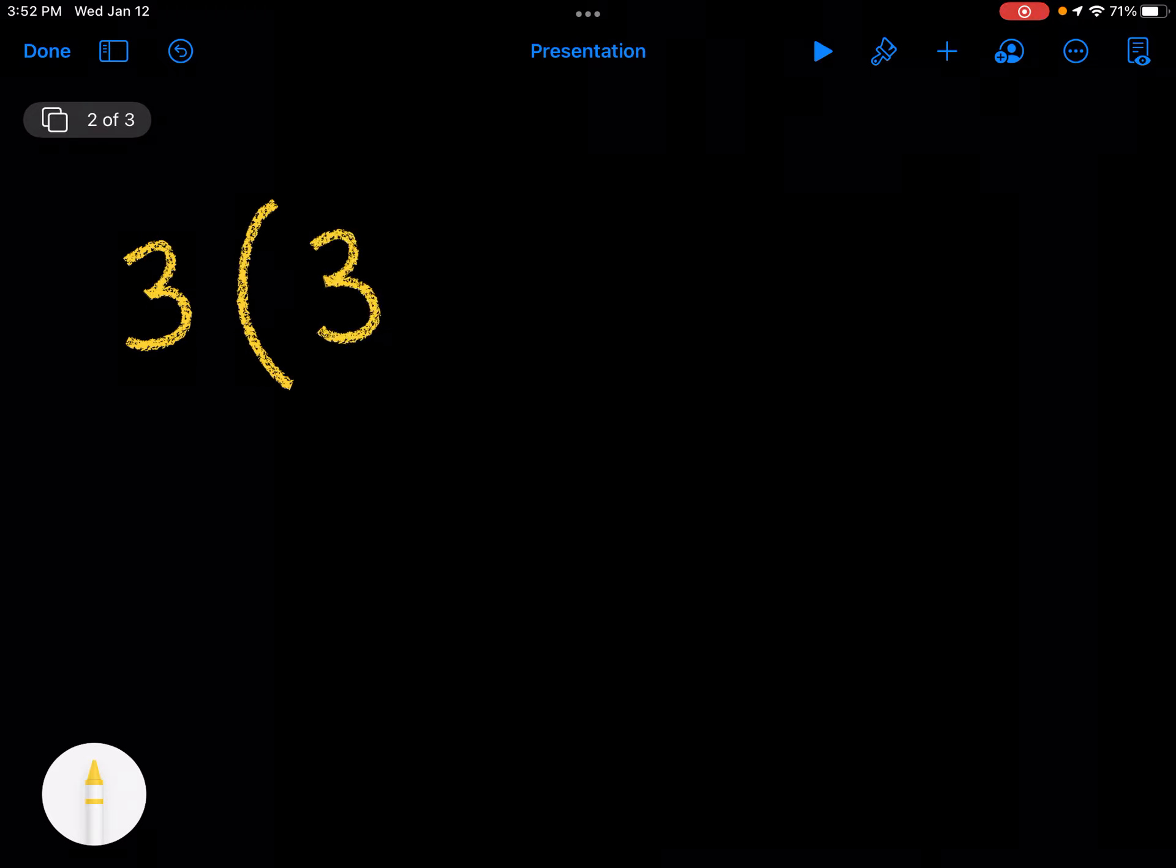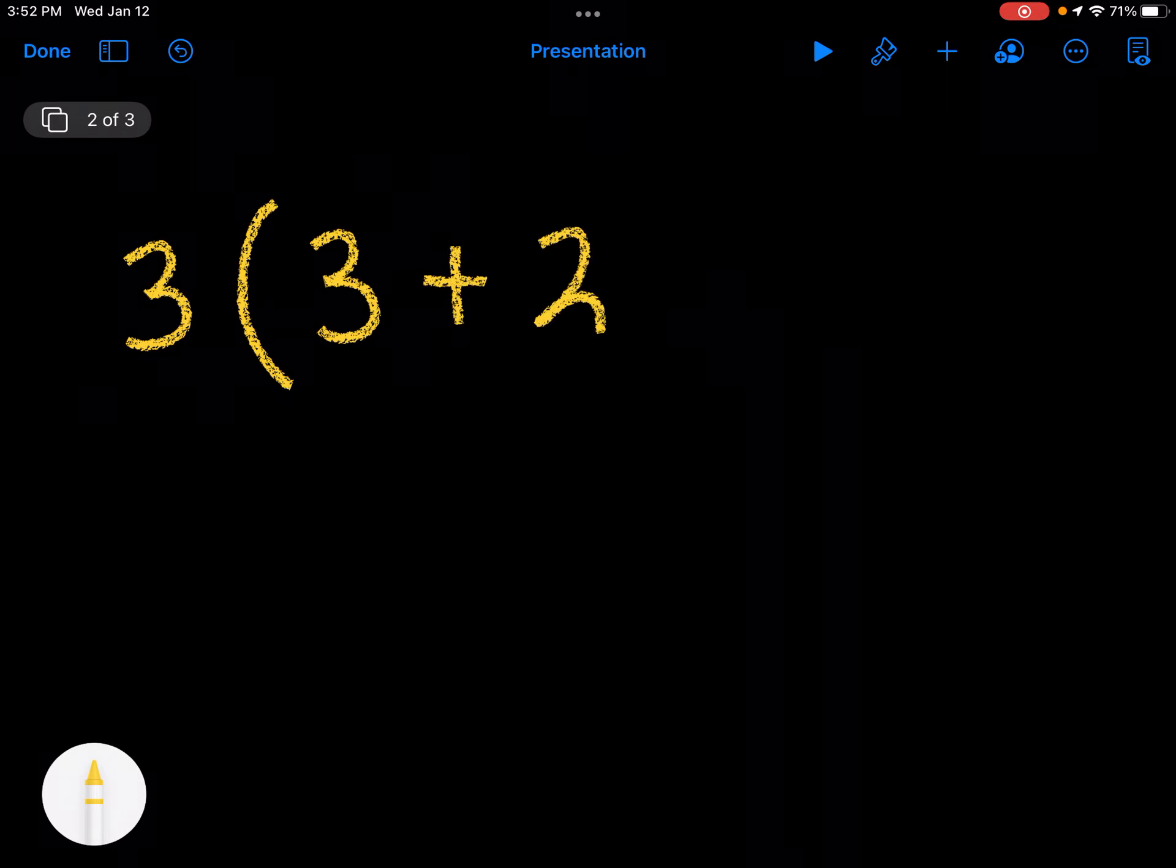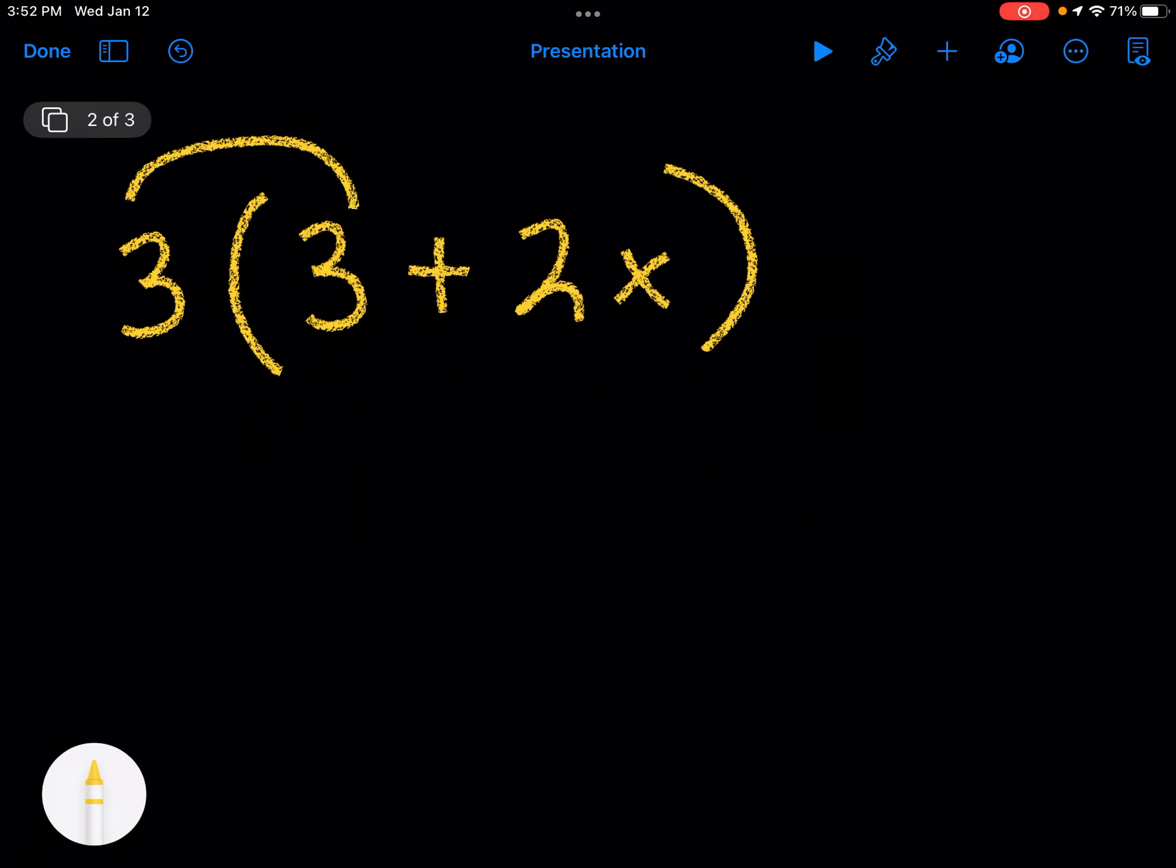So we're going to talk about the distributive property, which is what's on our choice board this week. So if I have a problem like 3 times 3 plus 2x, the distributive property means you're taking the number on the outside and multiplying it by everything on the inside.